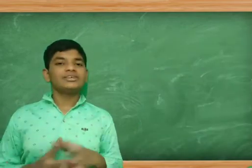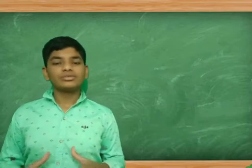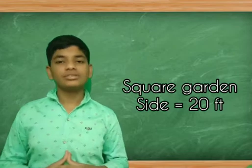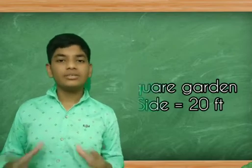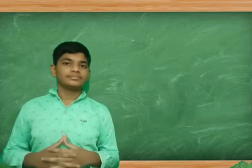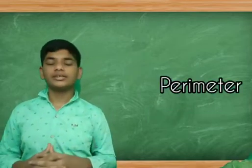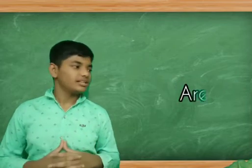Now let us see how these concepts are used in our daily life. My friend planned to lay a square garden in front of his house with side 20 feet. He took my help to lay fencing and flooring. To find the length of fencing, we need to find its perimeter. And to lay flooring, we need to find its area.